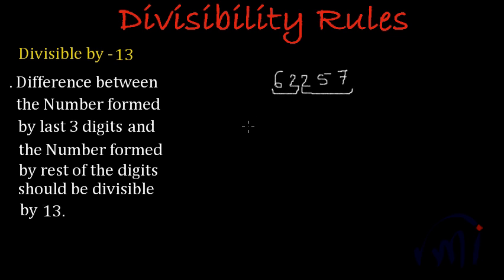What we have to do next? Next we have to find the difference between them. So I'll subtract 62 from 257. 257 minus 62, 7 minus 2 gives us 5. I have to borrow 1, so this becomes 15. 15 minus 6 is 9 and 1 as it is. So the difference I am getting is 195.